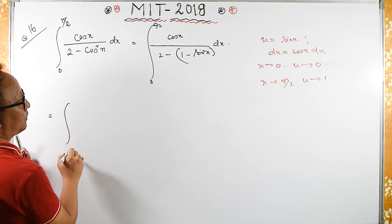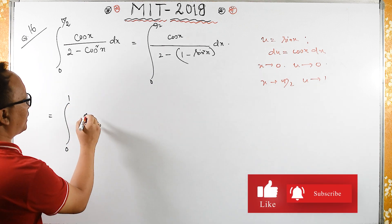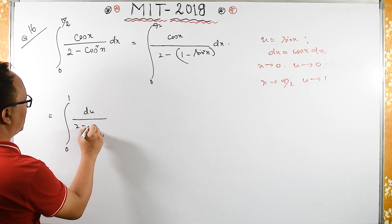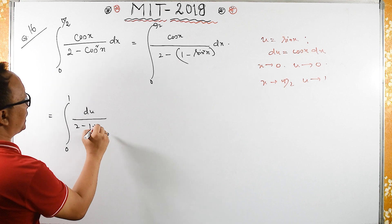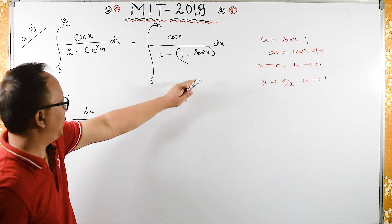So it equals 0 to 1, cos x dx becomes my du upon 2 minus 1 plus, minus minus plus, sin square is u square.